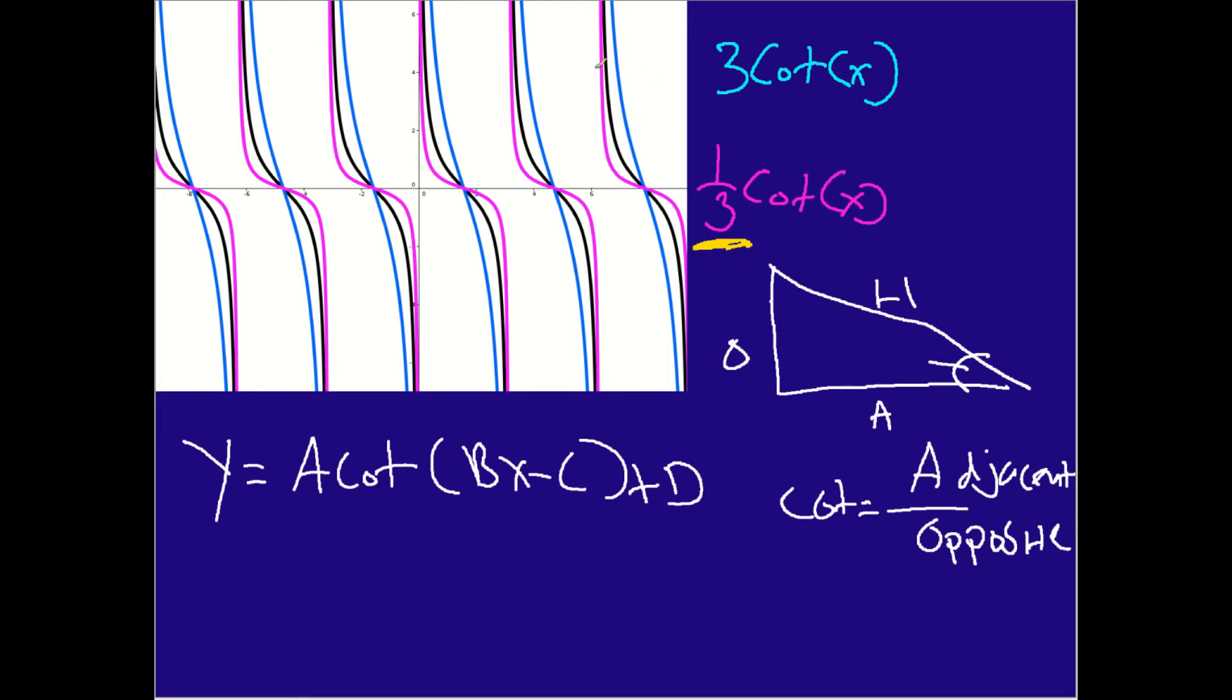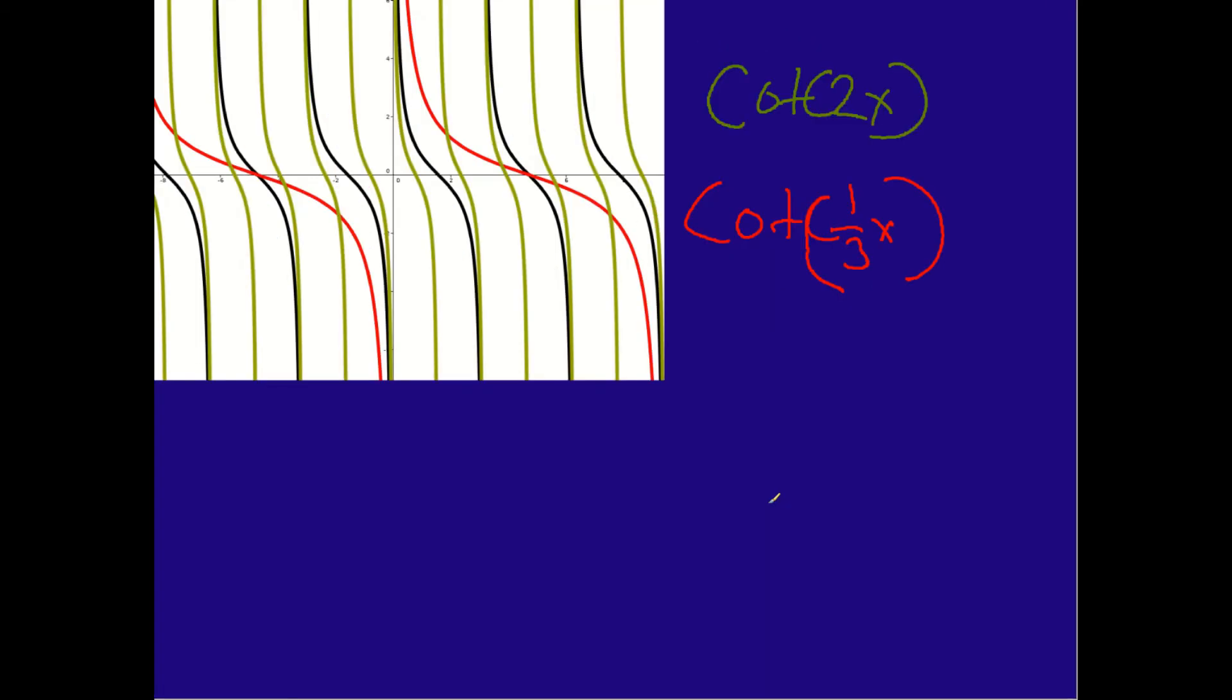Now, if we made this negative, instead of it looping this way, it would loop kind of like this, if you will. That's what happens when it's a negative number. So the negative sign just kind of switches the direction of that shape, if you will.